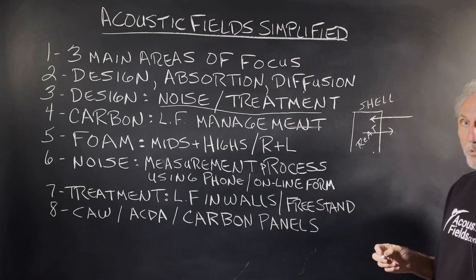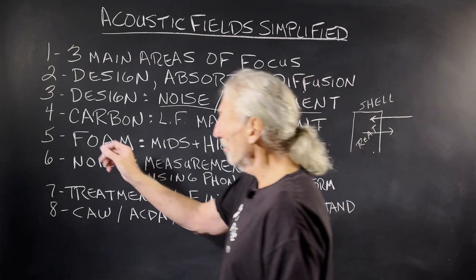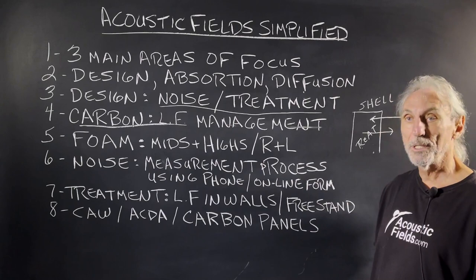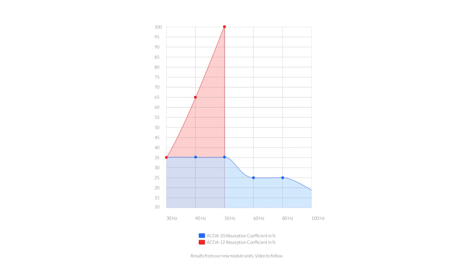That depends on usage, so we have two kinds of technology. Carbon is for our low frequency management inside our diaphragmatic absorbers, and then our foam is for mids and highs — above 125 Hz. Rate and level are always critical. Look at the graph on the carbon, our ACDA12 — look at the performance. Look at the graph on the foam, look at the rates and levels. They're almost identical; that's purposely designed so they both work together.